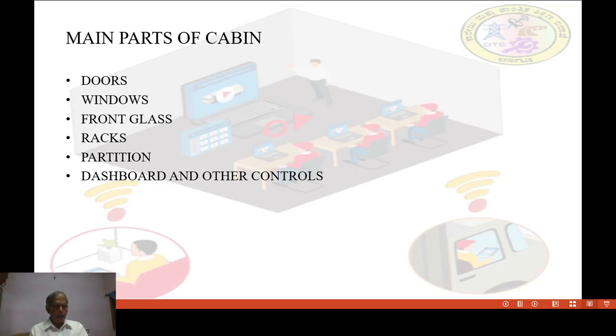Number 6, dashboard and other controls. Dashboard provided in front of driver's seat. It consists of all gauges and switches like speedometer, fuel gauge, temperature gauge, oil pressure gauge and other control switches.